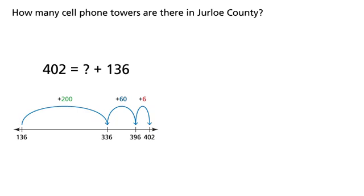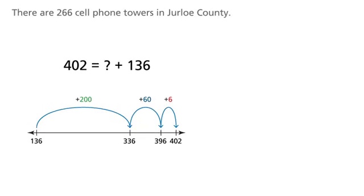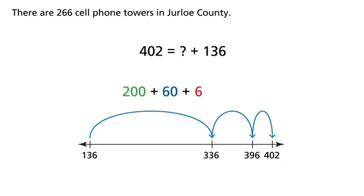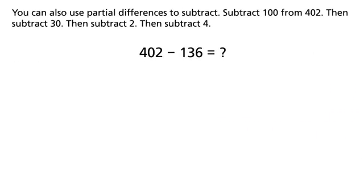200 plus 60 plus 6 equals 266. There are 266 cell phone towers in Jurloe County. You can also use partial differences to subtract. Subtract 100 from 402.